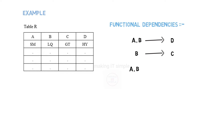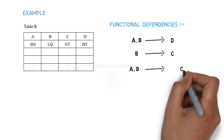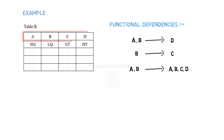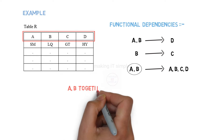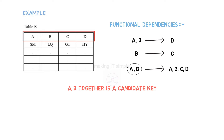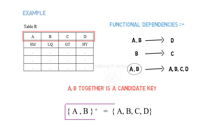So using A and B we can find out C and D, and also A and B themselves. That means we can identify all the attributes present in this relation using A and B. Therefore, we can say that A and B together is a candidate key. By using the candidate key A and B we can identify the complete tuple — this is called closure. The closure of A and B gives us all four attributes: A, B, C, and D.